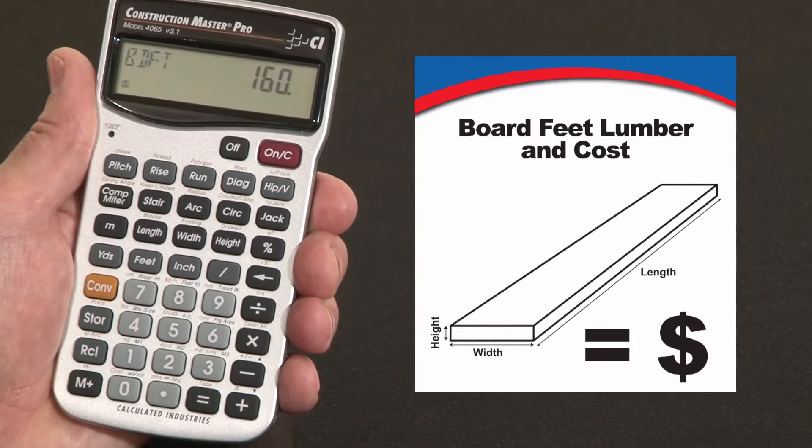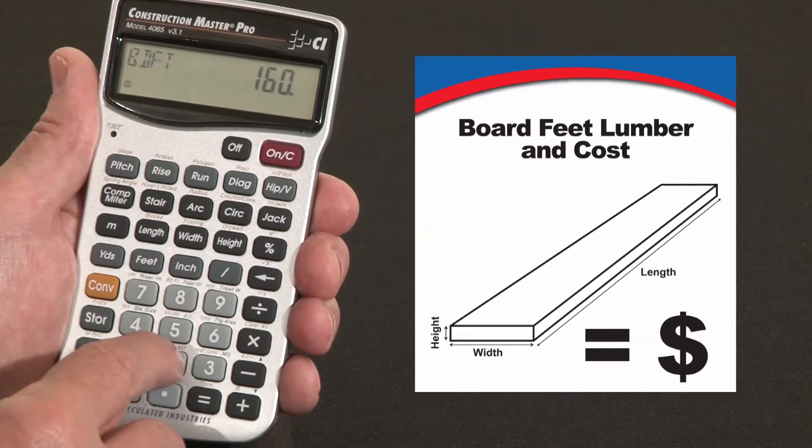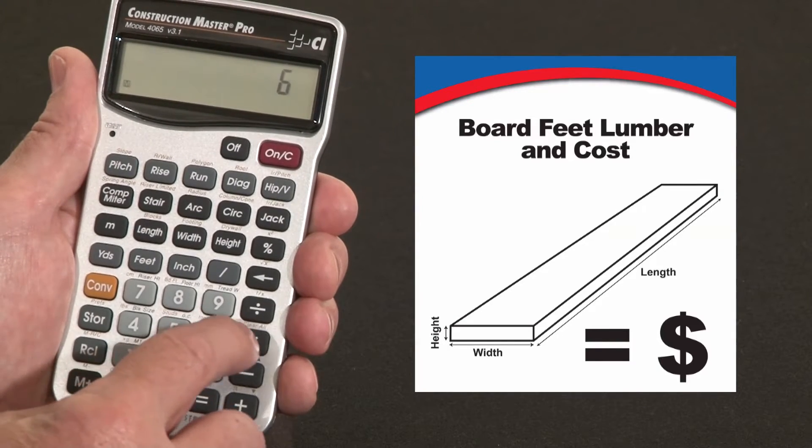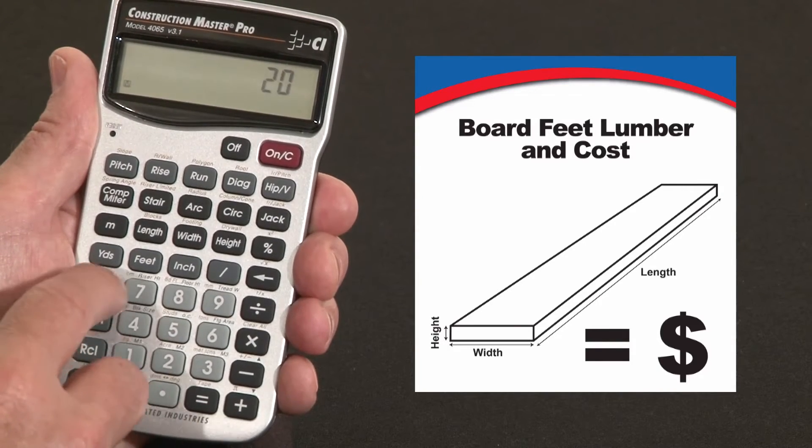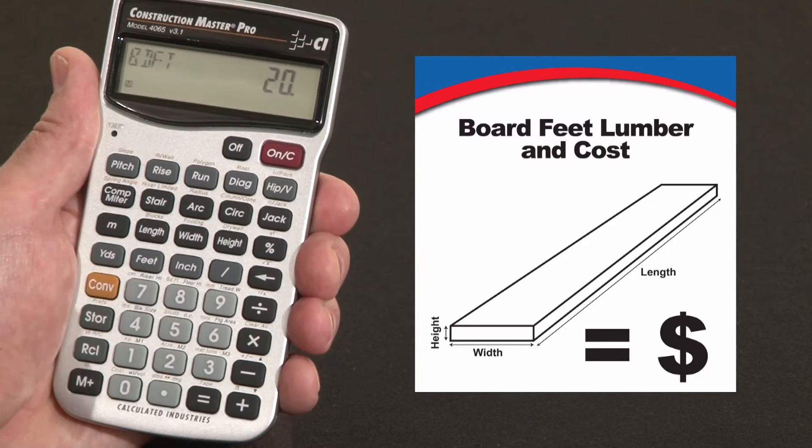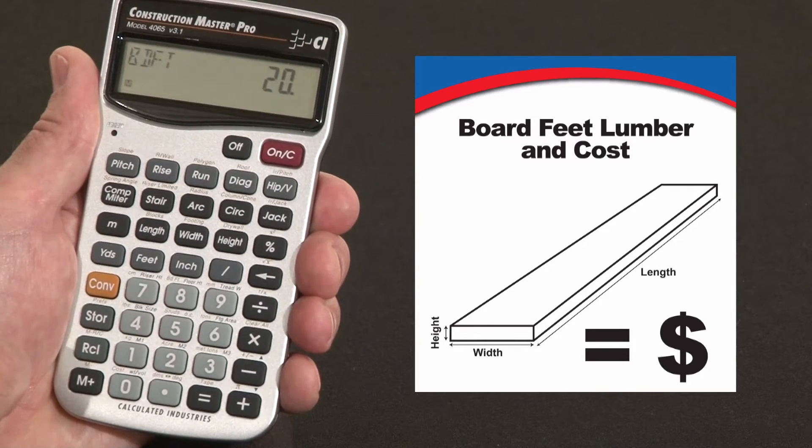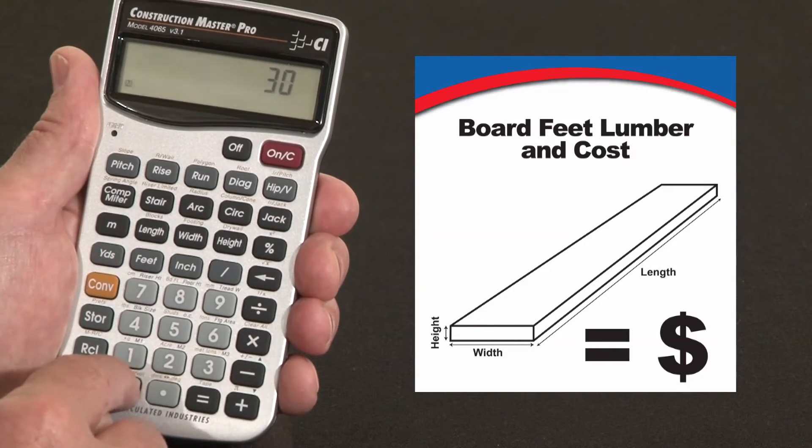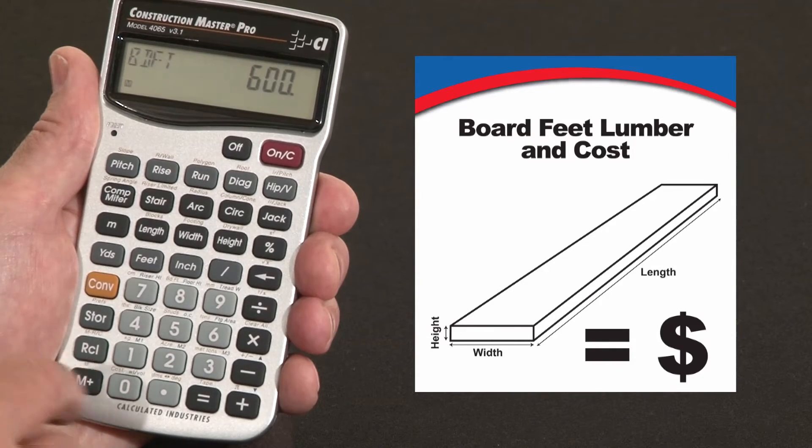And I need 30 pieces of 2x6x20. 2x6x20, convert board feet. And now I can say I need 30 pieces of that, times 30 equals 600 board feet. Put that in the memory.